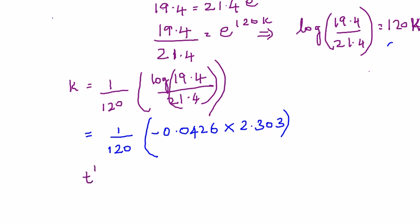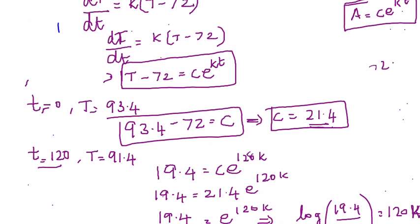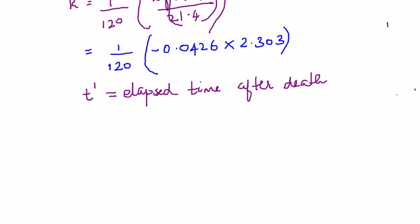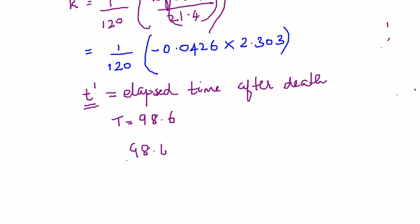We assume a variable t-dash to represent the elapsed time after death. We know that at time t-dash, the body temperature would have been the normal body temperature of 98.6°F — that is, at the moment of death the body was at normal temperature.